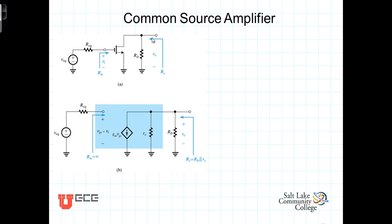We create the small signal or the AC model by replacing the transistor with, in this case, the hybrid pi model.